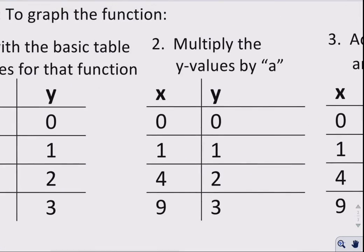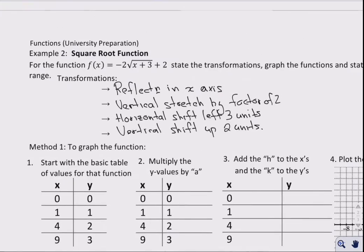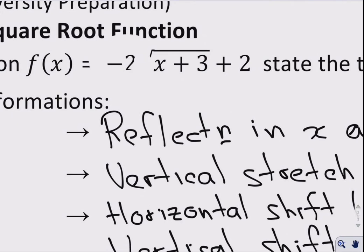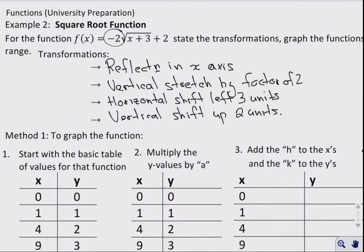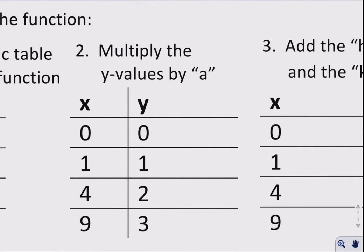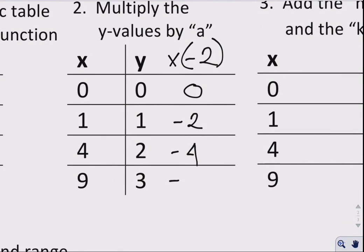So let's erase that, moving on. What is our a value? Well, in the equation, my a value is negative 2. So my y values get multiplied by negative 2. Okay, put the brackets there so it doesn't lead to confusion. And my values are going to become 0, negative 2, negative 4, and negative 6. There we go.